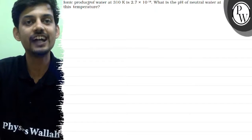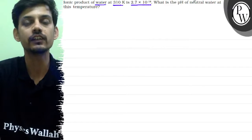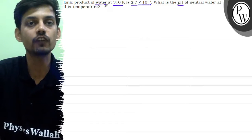Hello, the question says ionic product of water at 310 Kelvin is 2.7 × 10^-14. What is the pH of neutral water at this temperature? We need to find the pH of neutral water when the ionic product kw is given.